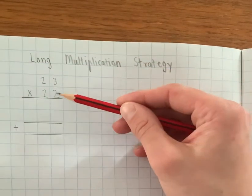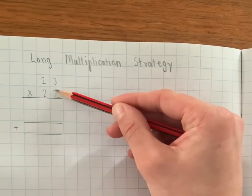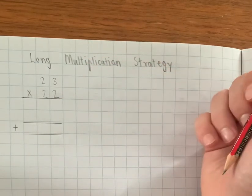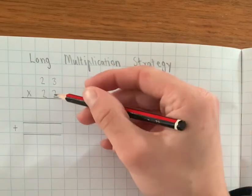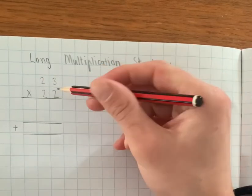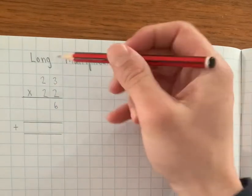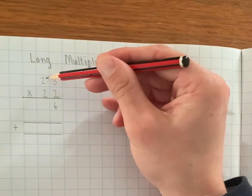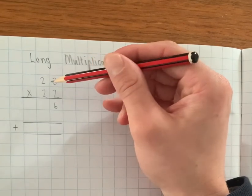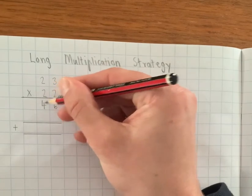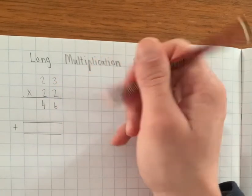So what we're going to do first is we're going to look at this 22 and we're going to sort of split it into the tens and the ones, and we're going to multiply our two first. So at first we're going to do 2 times 3, and then we'll do 2 times 20. So 2 times 3 is 6 like so, and 2 times 2 is 40, and I just put the 4 there. Okay, so that's 46.